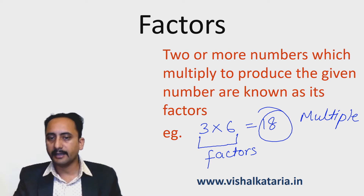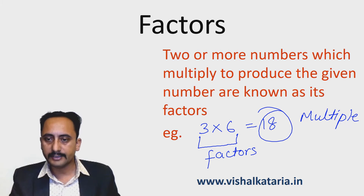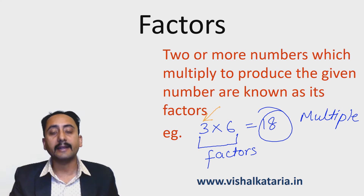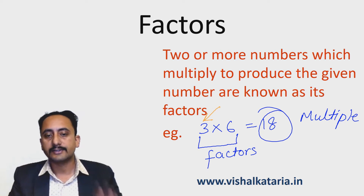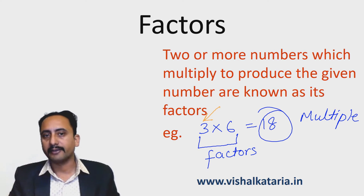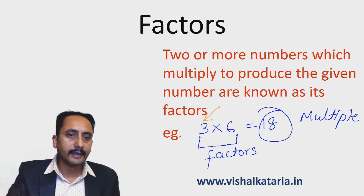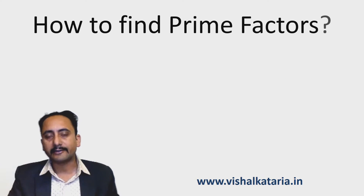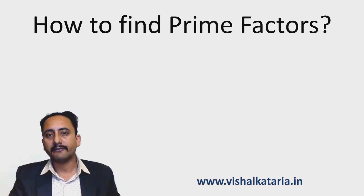So 18 is a multiple, and 3 and 6 are factors. Out of these two numbers, 3 is prime, so 3 is a prime factor of 18. A factor which is prime is called a prime factor of a given number. Now, how can we find prime factors of a given number?